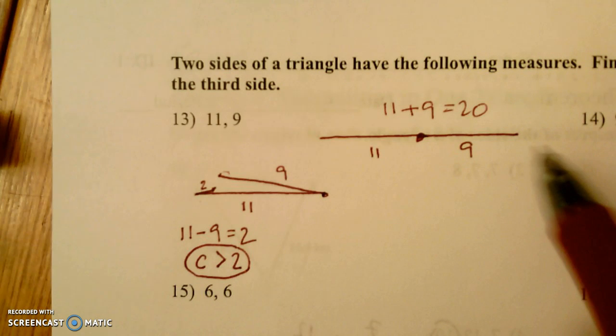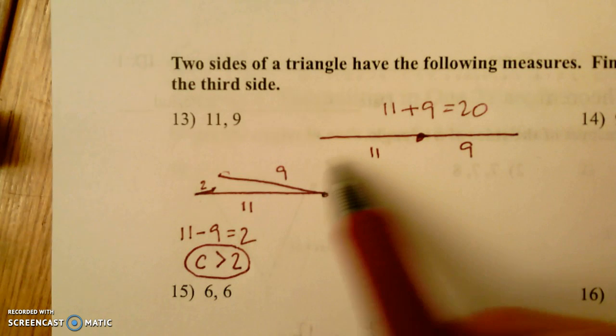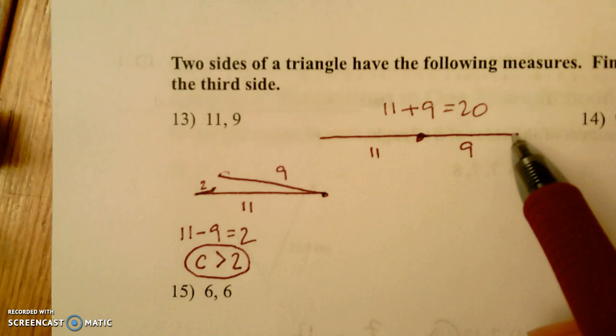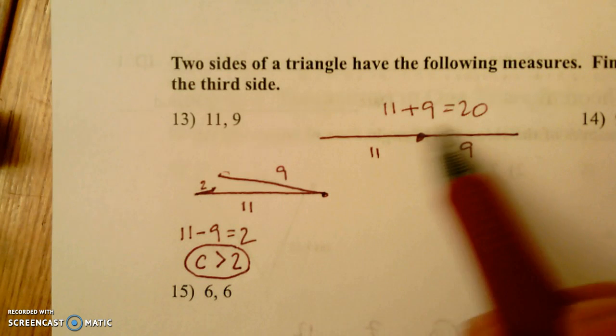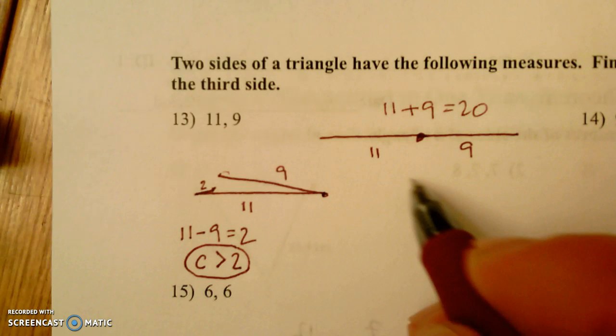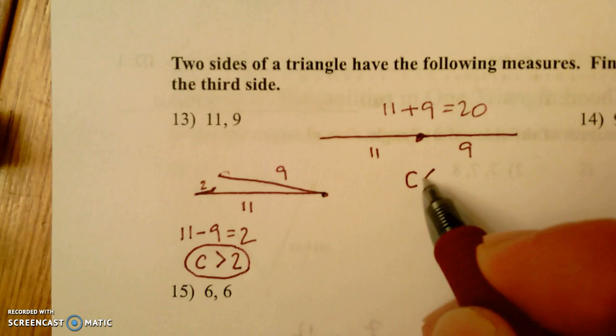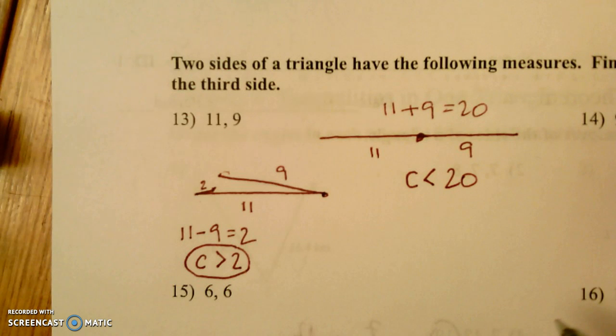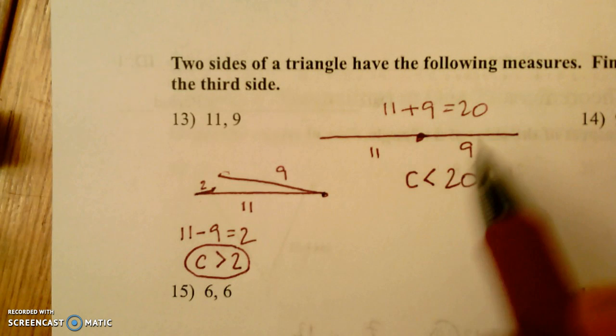Now of course again that wouldn't quite be a triangle because it would just be a flat line. But if I inch these both up just a little bit and make this a little less than 20, then we would have a triangle. So c has to be less than 20, which is 11 plus 9.